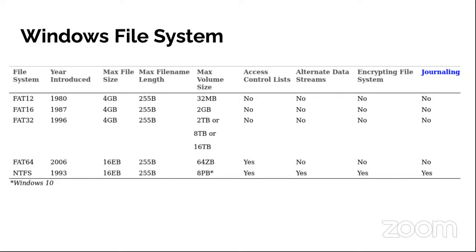FAT12 is used in floppy disks and is universally supported by modern operating systems. FAT16 was the 16-bit file system for MS-DOS, with file names limited to eight characters, extensions to three characters, and disk partition maximums of two gigabytes. FAT32 is a 32-bit version of FAT handling a maximum file size of four gigabytes. FAT64, also known as exFAT, can be recognized by macOS but, like its predecessors, it doesn't have security features or journaling — a file system record keeping changes made to files.